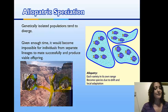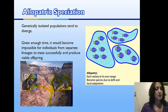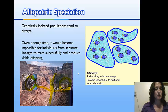They have now speciated, and if we brought them back together, they would not be able to mate and produce viable offspring. They do, however, have a common ancestor at some point in history.